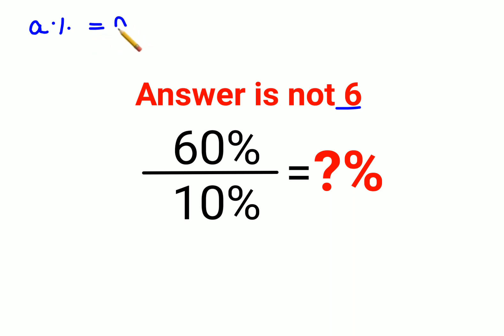you can convert it into a fraction by dividing that number by 100. So here we have 60 upon 100 divided by 10 upon 100.